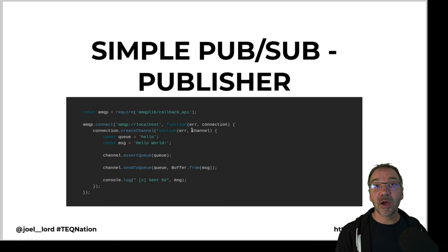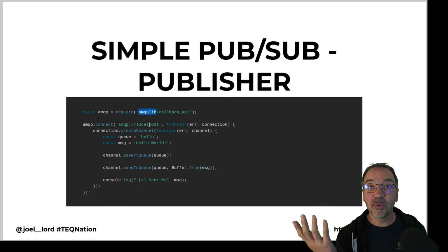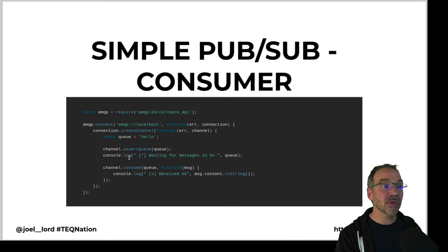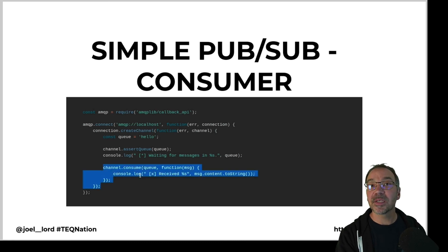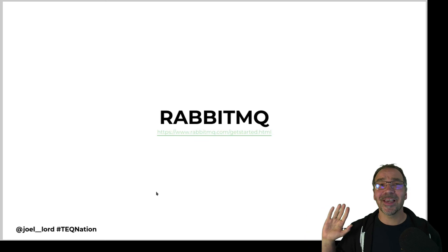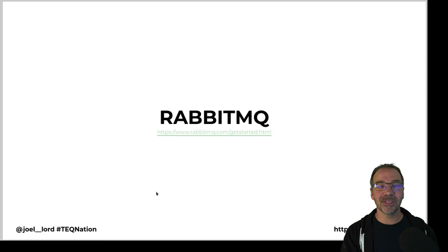To use a messaging queue with amqplib, you create your channel and send a message to the queue — that's the publisher code. To consume those messages, you use pretty much the same code, except a callback is triggered every time a message is available. RabbitMQ has a great getting-started guide, so if you're interested in messaging queues, definitely take a look at them.